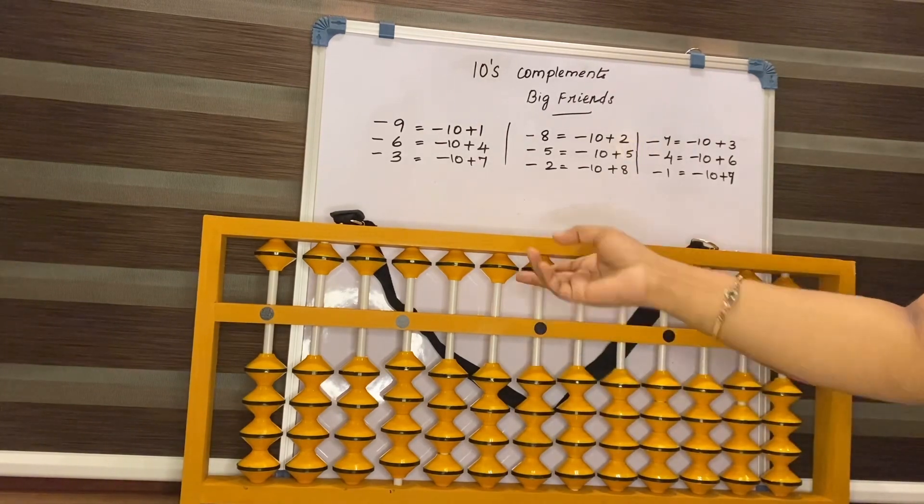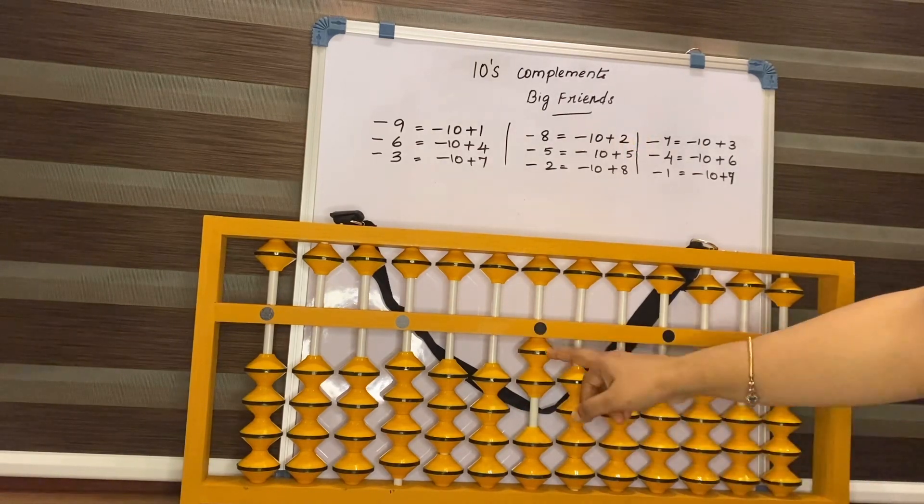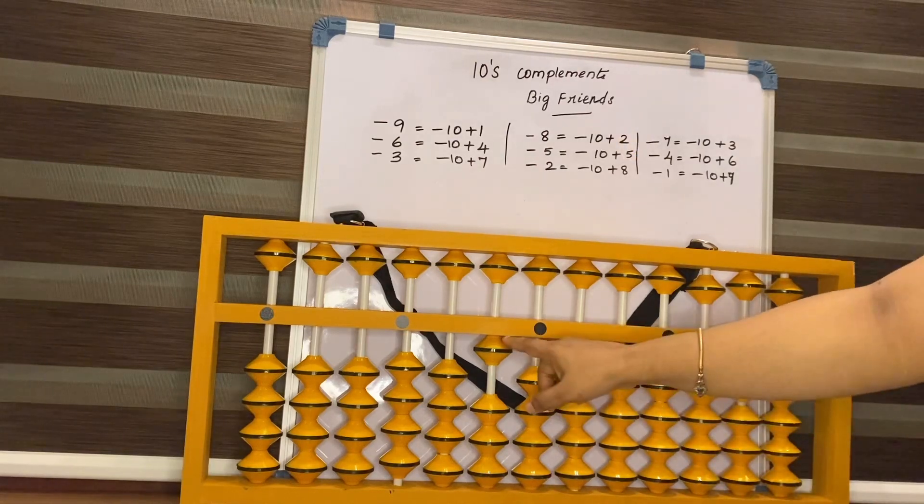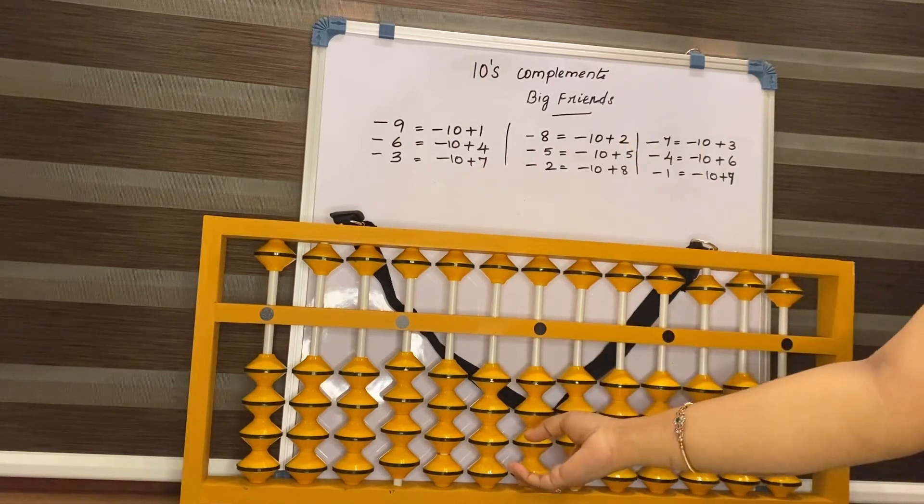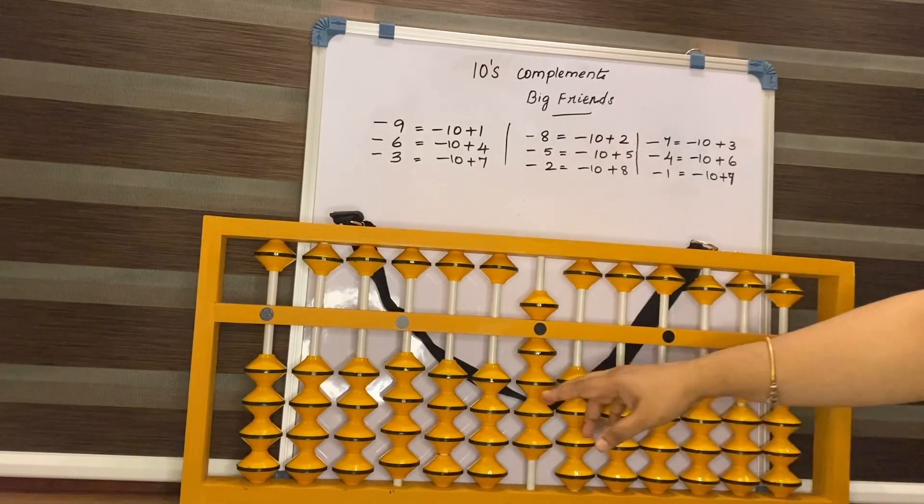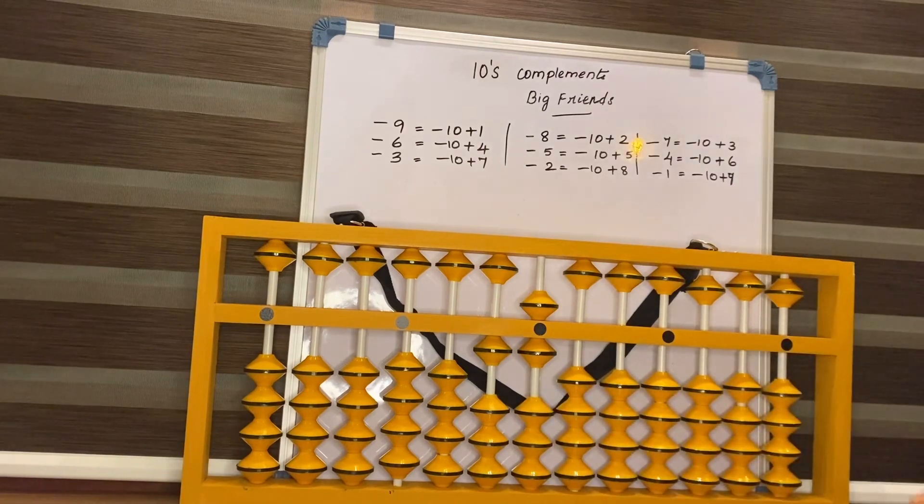One more. 2, 8. How to add 8? Add 10, less 2. Less 1. Less 10, add 9. And 7. Add 10, less 3. Answer is 16.